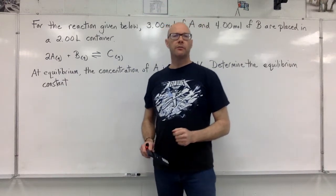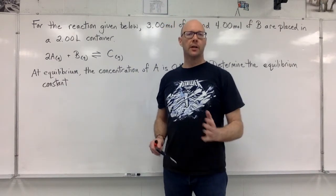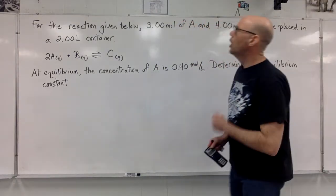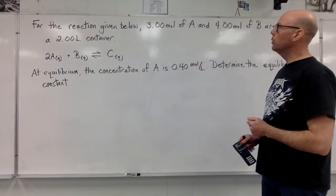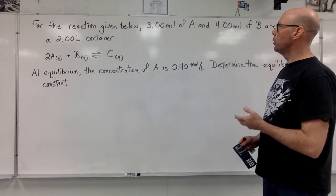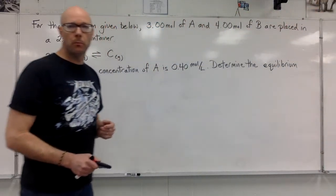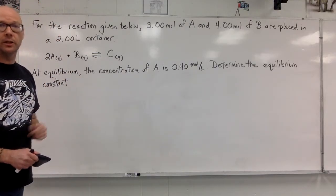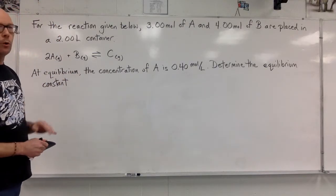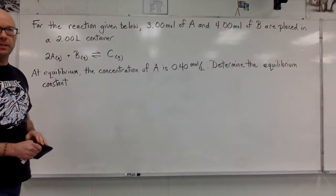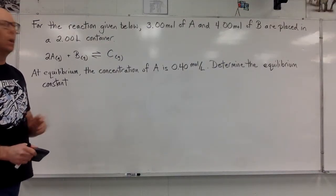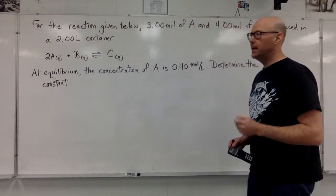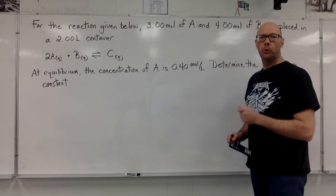Hi everyone. After talking about the ICE box last time, let's do an example. For the reaction given below, 3.00 moles of A and 4.00 moles of B are placed in a 2.00 liter container. 2 moles of A reacting with B in equilibrium with 1 mole of C. At equilibrium, the concentration of A is 0.40 moles per liter.